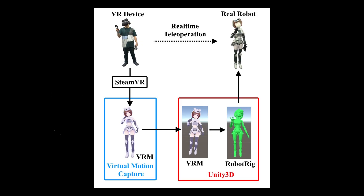This figure shows an overview of the teleoperation system using a VR device. We control the robot's VRM model — one commonly used file format for humanoid 3D models — using a VR device, and the data is transmitted to Unity 3D. We then convert the motion into an IK-like animation and operate the robot in a similar manner to previous work.